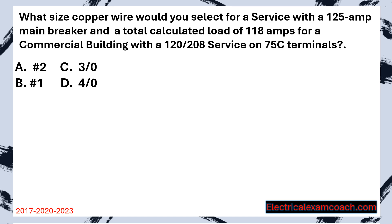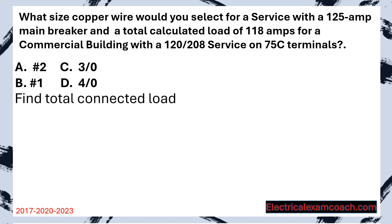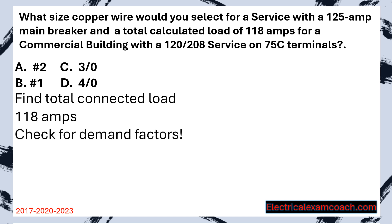What size copper wire would you select for a service with a 125 amp main breaker and a total connected load of 118 amps on a commercial building with a 120-208 service on 75 degrees C terminals? Step one, we're going to find our total connected load. In this case, they give it to us — it's 118 amps — but we must check for demand factors. In this case, there are no demand factors, so we're going to carry on.